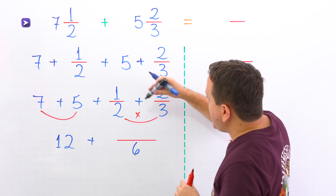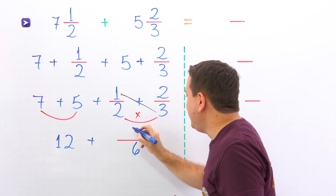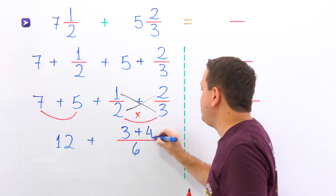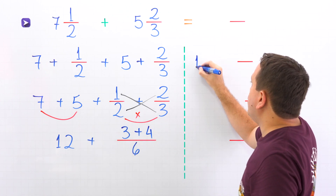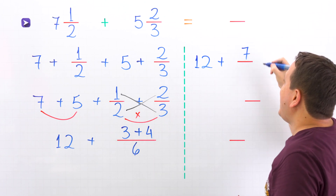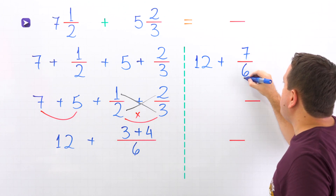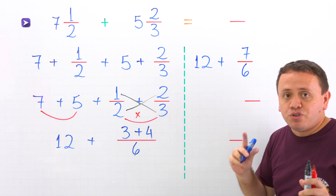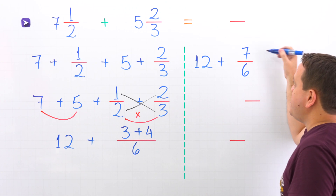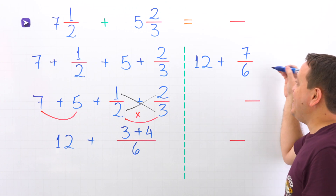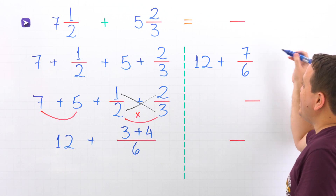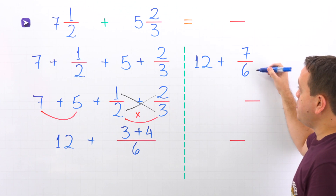Then we are going to cross multiply. 1 times 3 gives us 3, plus sign. On this side, we have 2 times 2 and that is 4. Then 12 plus 3 plus 4 gives us 7, and the denominator stays the same — 6. At this point, we should remember improper fractions. An improper fraction is a fraction where the numerator is greater than or equal to the denominator. 7 sixths is an improper fraction given that the numerator 7 is greater than the denominator 6.